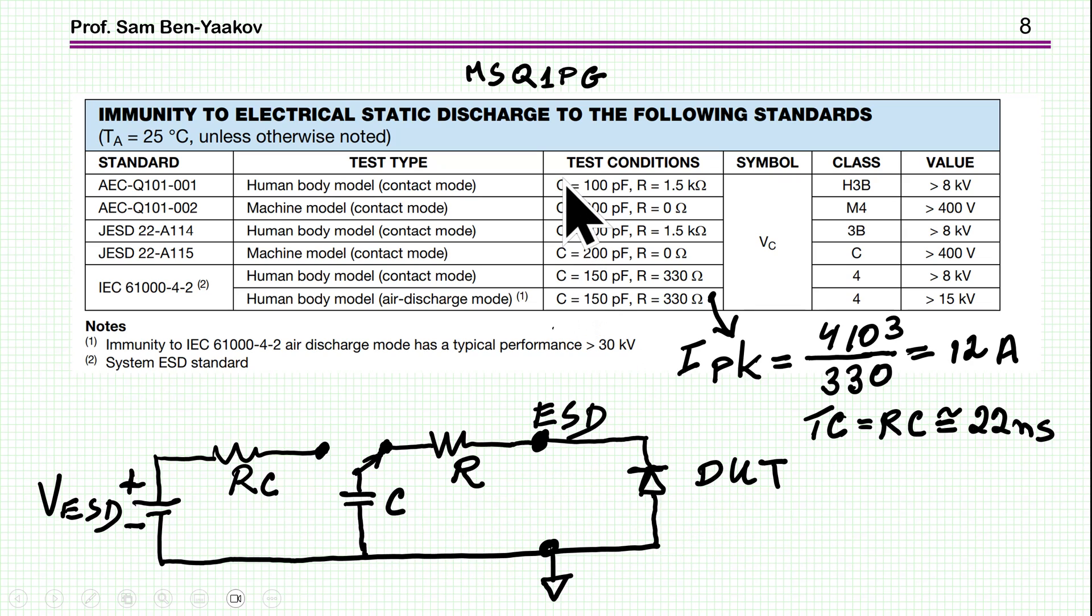So this particular rectifier will withstand these test conditions. Now the pulse is very short. We are talking about a time constant of 22 nanoseconds, so it's a 100 nanosecond pulse. It's a short pulse. We'll see it in a minute. And this is how this unit will be tested for the ESD standard.